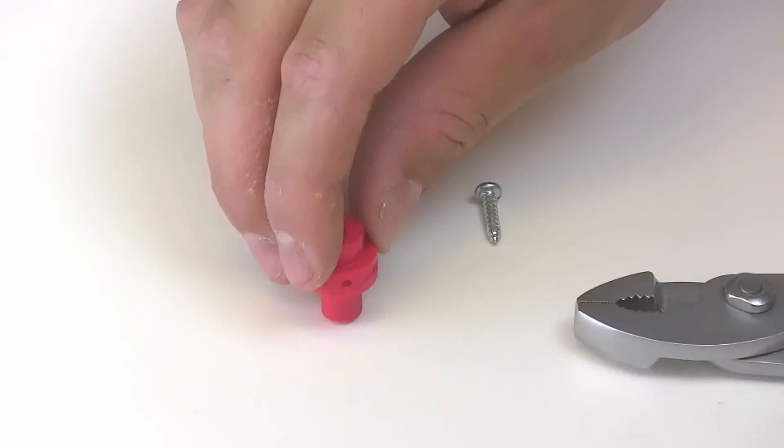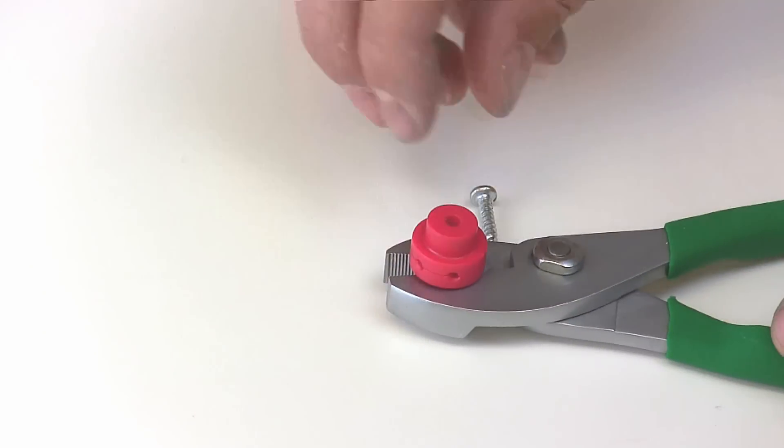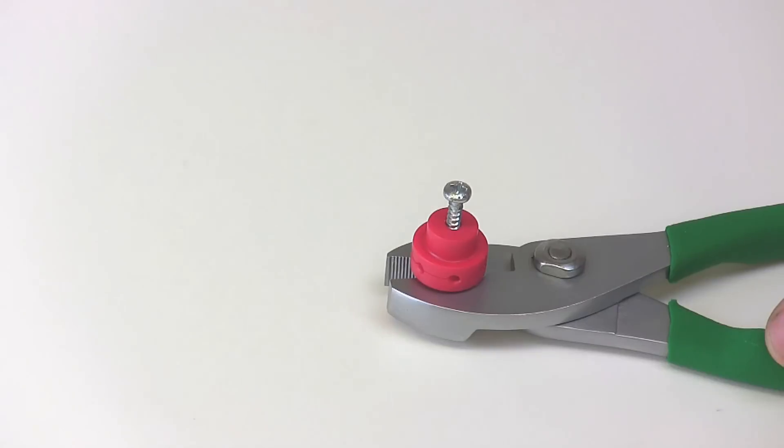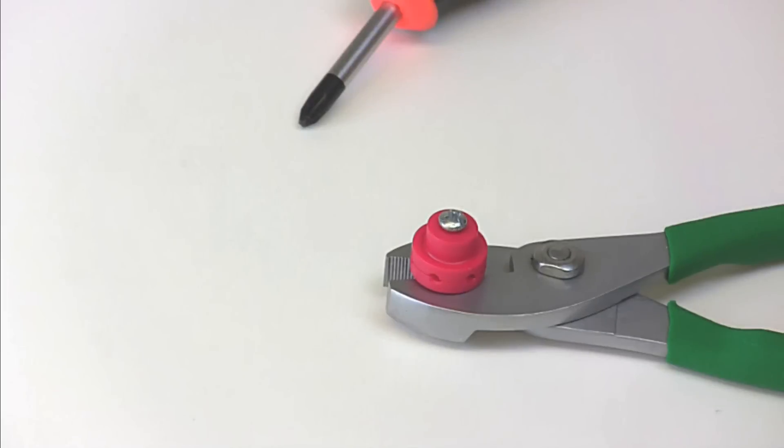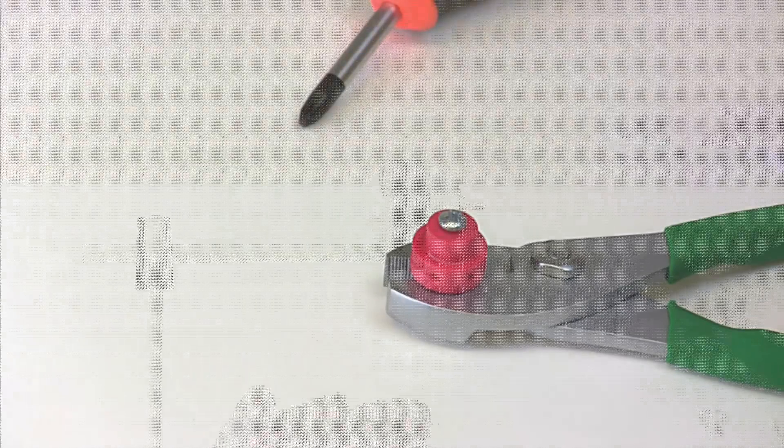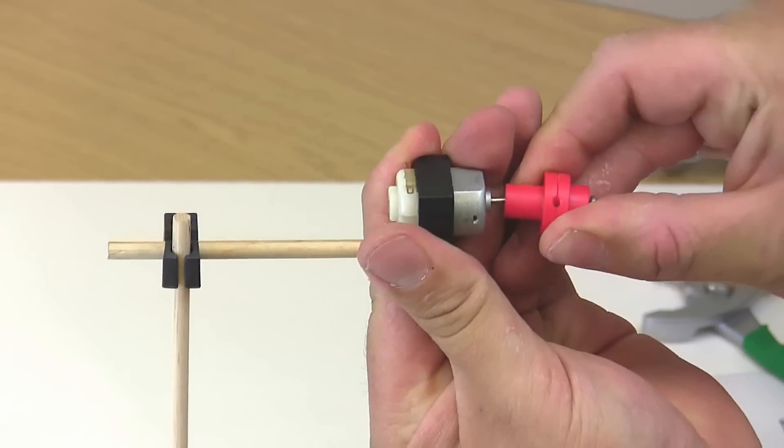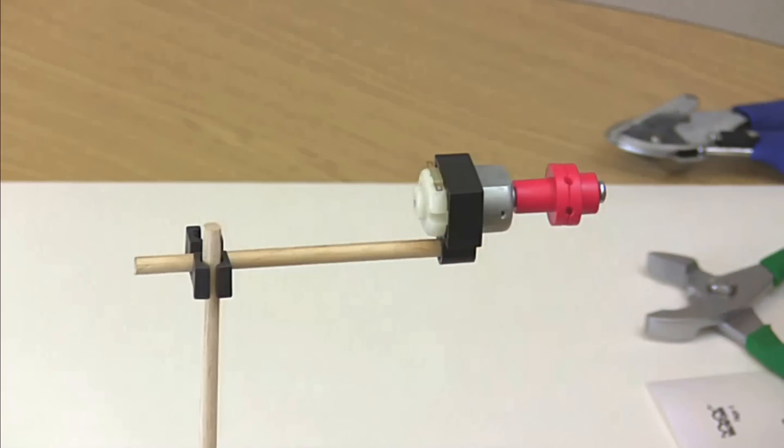Attach the mini hub top to the base using a number 6 screw. Remember to keep the screws slightly loose. We recommend using a pair of pliers to hold the base of the hub when you're tightening down the screw. Place your mini hub onto the motor shaft and your turbine stand is complete.